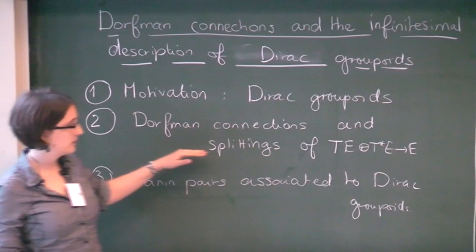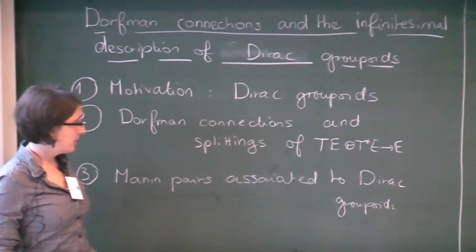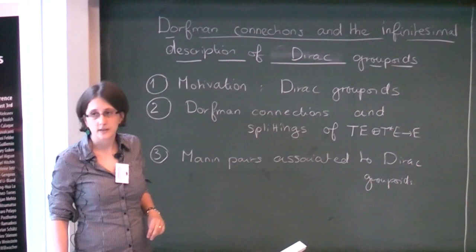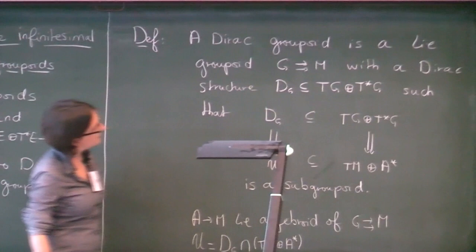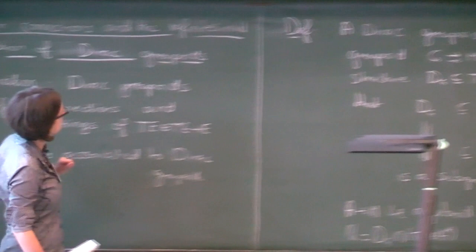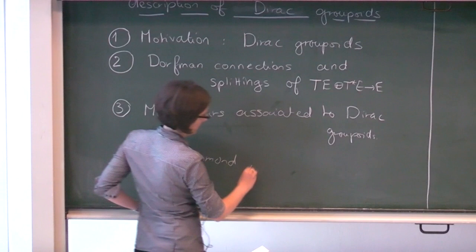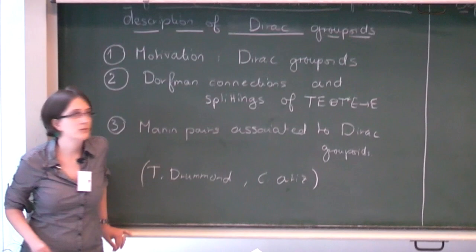I'll show how a class of Dorfman connections correspond to splittings of the Courant algebroid over a vector bundle. Then I'll go back to the problem and show how the infinitesimal objects associated to Dirac group points are, in fact, Malin pairs. We start with the definition of a Dirac group point. This work grew out of a joint work with Thiago Drummond and Christian Ortiz, and I learned a lot from this collaboration.